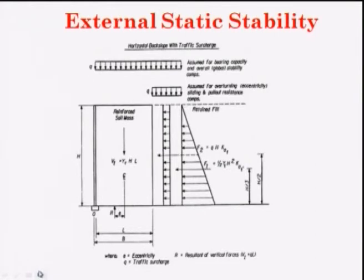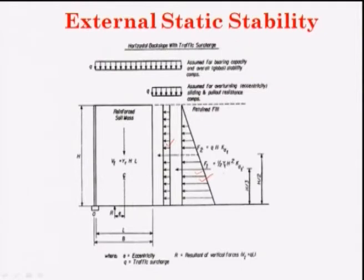For a simple reinforced soil mass, V = γ_R · H · L, where H is height and L is width. The earth pressure distribution diagram includes pressure due to surcharge and due to soil. F_1 = ½·γ_F·H²·K_A and F_2 = Q·H·K_A. The resultant of F_1 acts at H/3 and of F_2 acts at H/2.